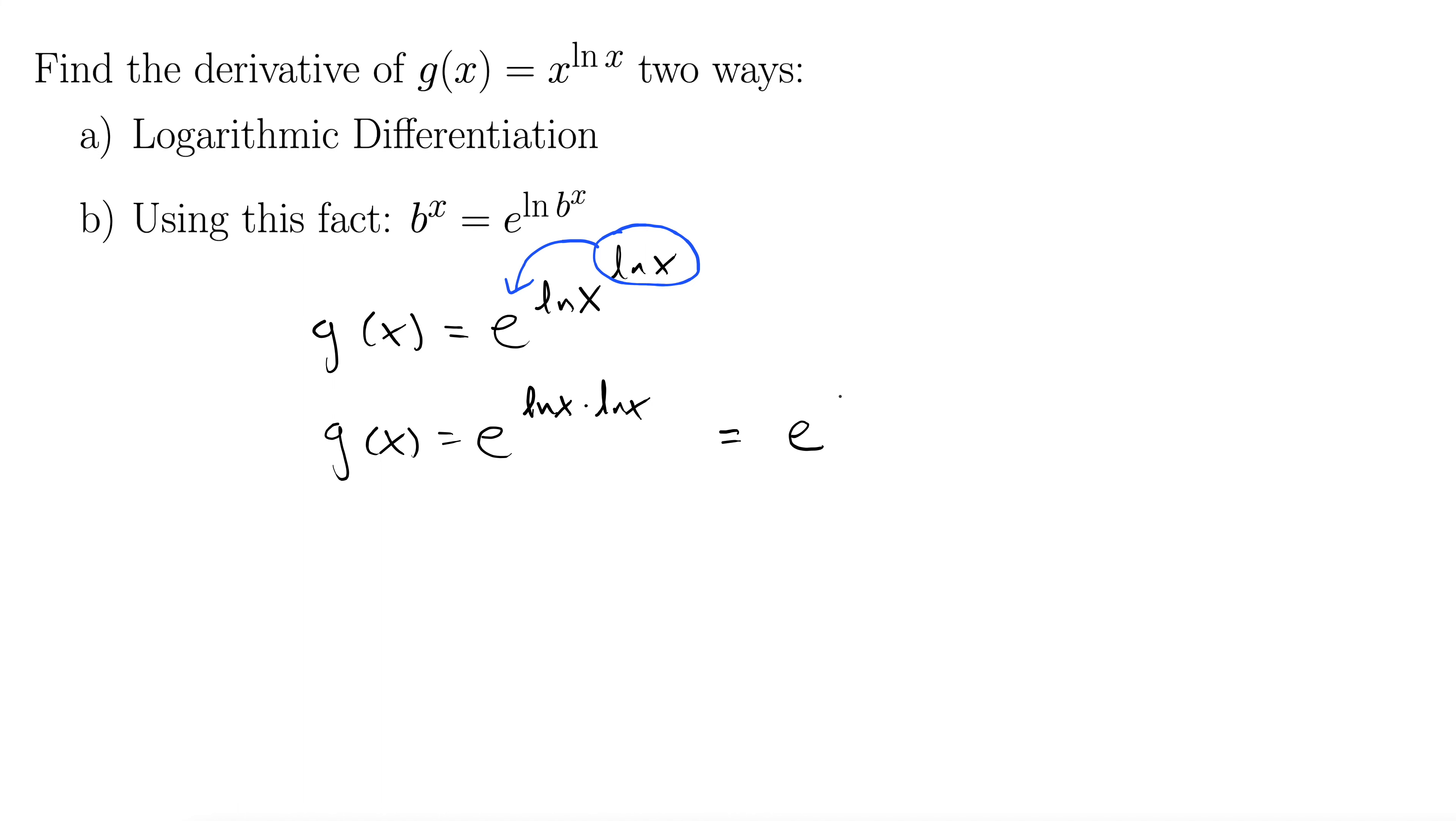Well how about we write that as e to the natural log of x squared. Natural log of x quantity squared, not the natural log of x squared, the quantity natural log of x squared. You need to be careful with those parentheses.